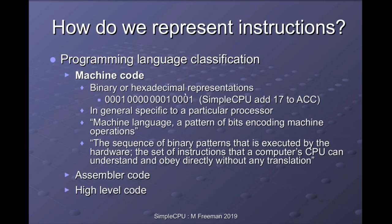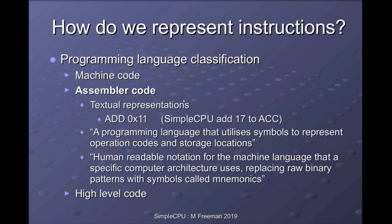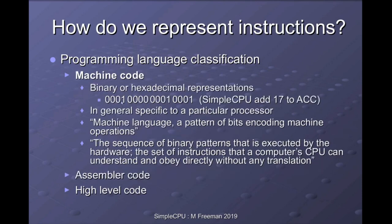In general, machine code is specific to one processor — sometimes shared across a processor family, but normally unique to a processor. It's the low-level representation of the instruction that the processor actually processes and understands. However, a string of ones and zeros is a bit hard for humans to understand, so we give that a textual representation — that's what assembly language is. There's a one-to-one relationship: one assembly language instruction represents one machine code instruction. Here you can see 'ADD 11 hexadecimal' is the same as the previous binary instruction. 'ADD' here is represented by the opcode field in the instruction.